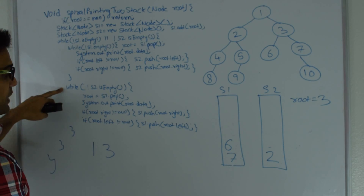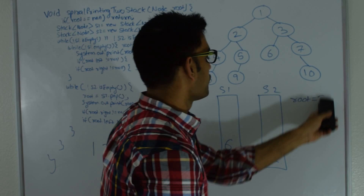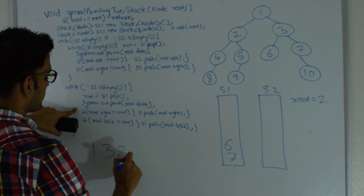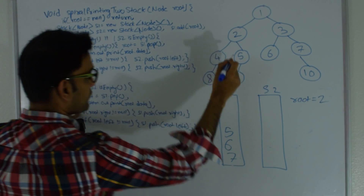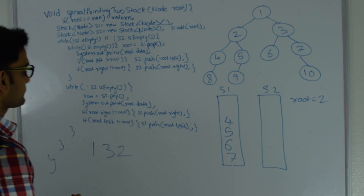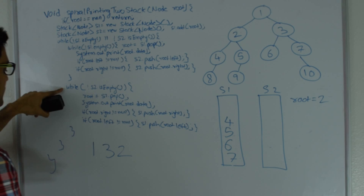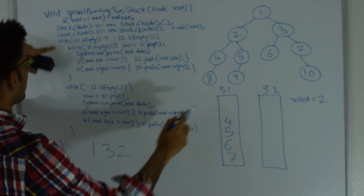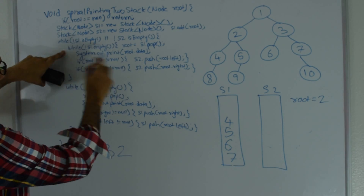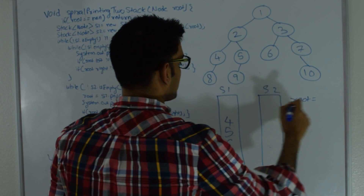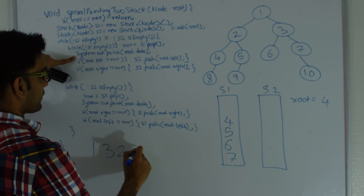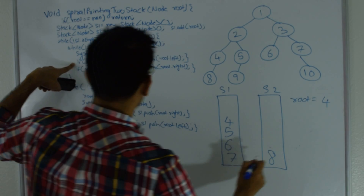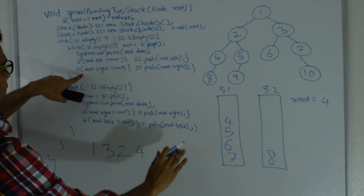Stack 2 still has elements — root becomes 2. We print 2. 2 has a right child pushed to stack 1 and a left child pushed to stack 1. Stack 2 is now empty, so we return to the outer while loop. Stack 1 is not empty, so we enter the inner while loop again — root becomes 4. Print 4. 4 has a left child pushed to stack 2; no right child. Root becomes 5 — print 5; left child pushed to stack 2; no right child. Root becomes 6 — print 6; no children.